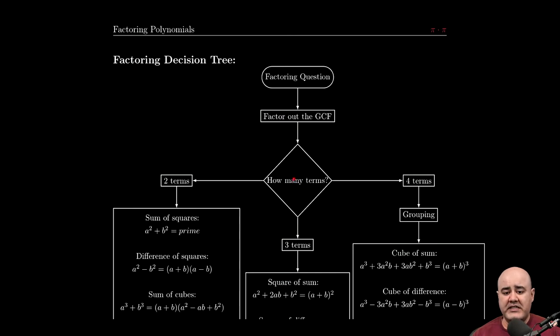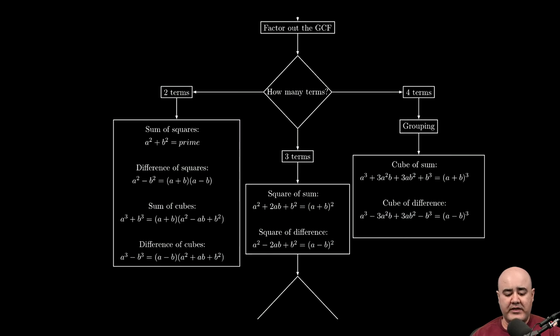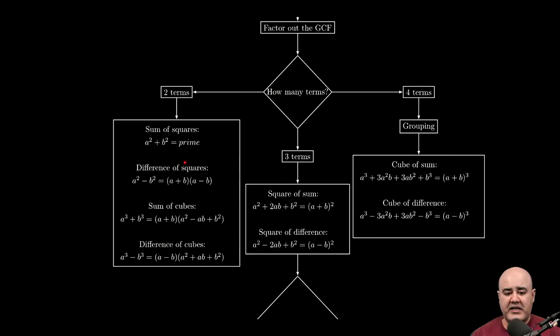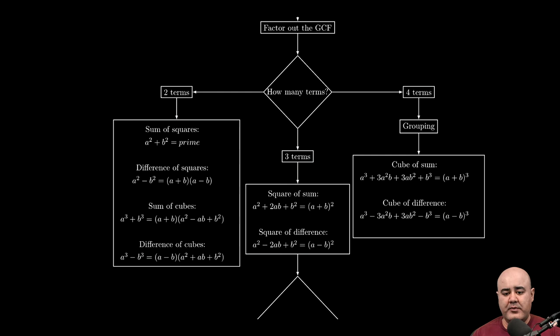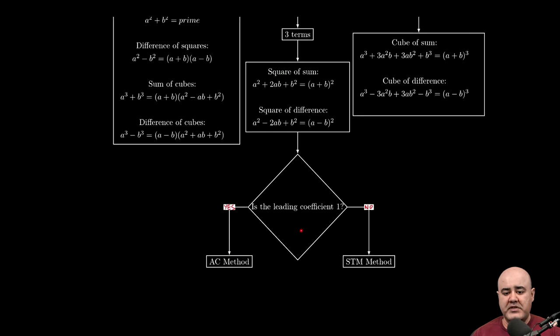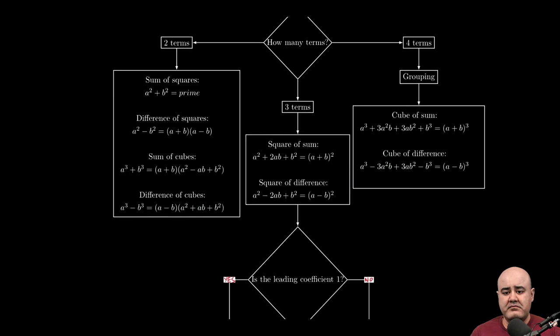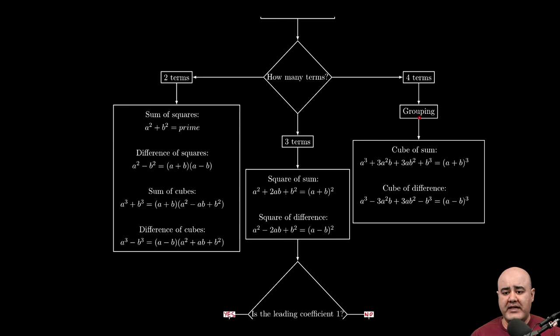Once you factored out the GCF, you ask yourself, how many terms do I have left? So after the GCF, if you still have two terms left, then you want to go down this path and you want to check to see if any of these four formulas apply. On the other hand, if you have three terms, then you try to see if one of these two formulas apply, or there's another decision tree down here. With four terms, we have either grouping or these two formulas.